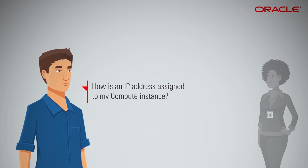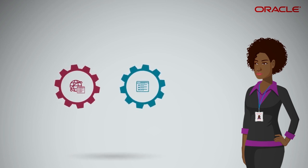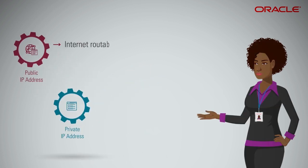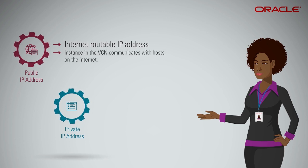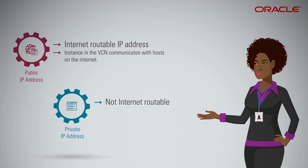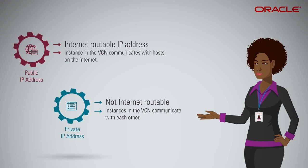How is an IP address assigned to my compute instance? Good question. Let's first understand the two IP address types: public IP address and private IP address. A public IP address is an internet routable IP address. An instance in your VCN communicates with hosts on the internet via a public IP address. A private IP address is not internet routable. Instances inside the VCN communicate with each other using private IP addresses, ensuring strong isolation.